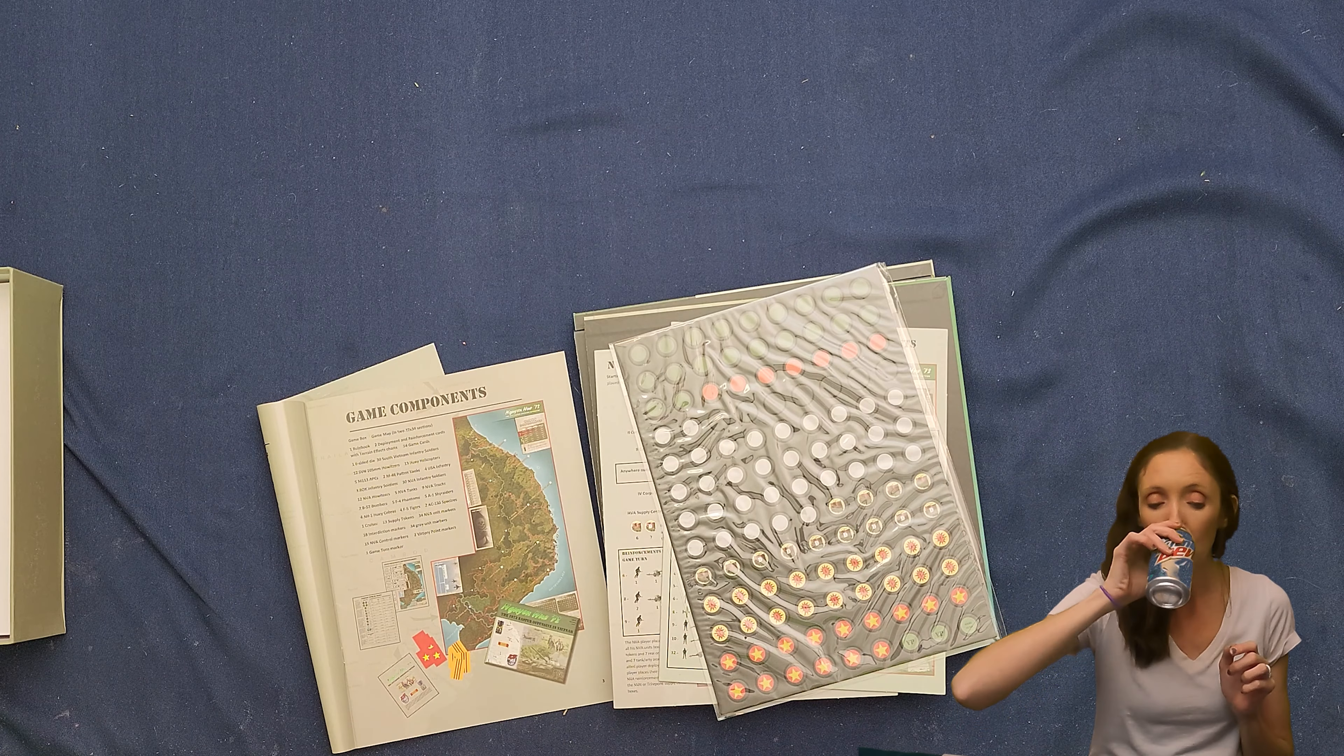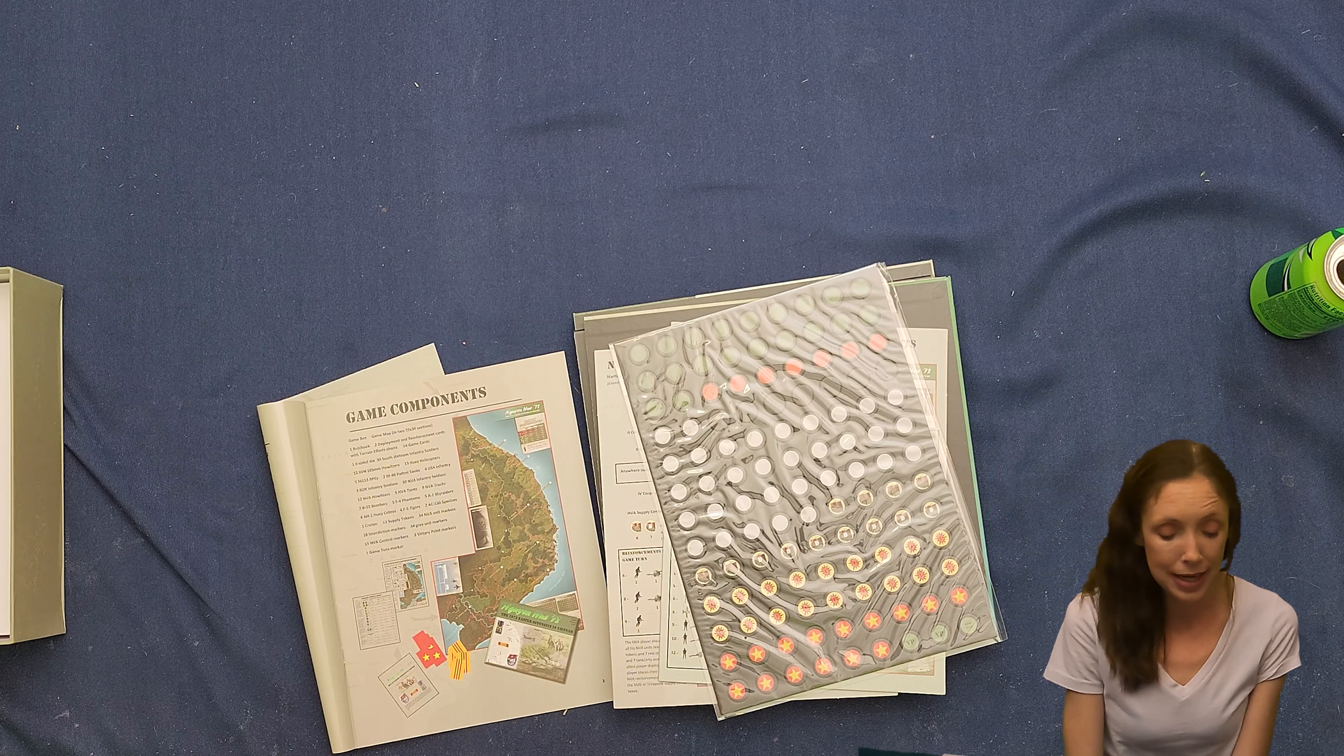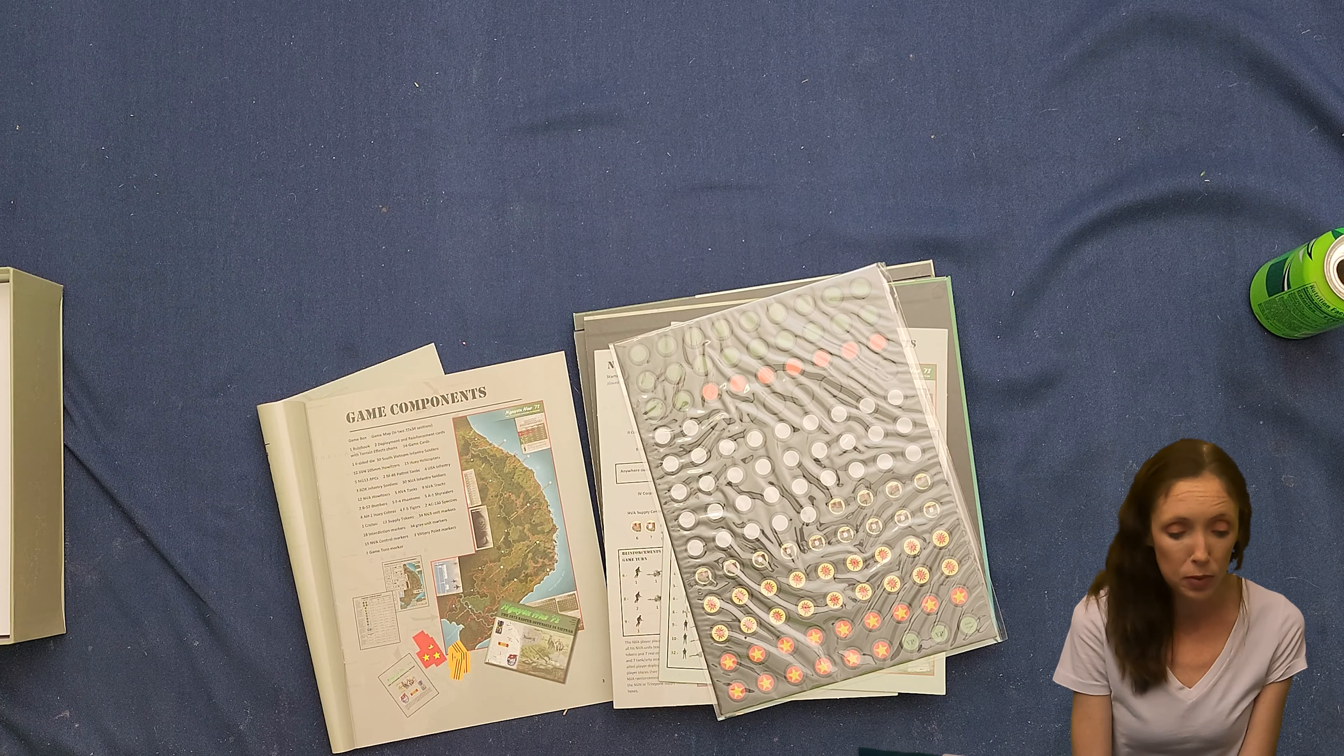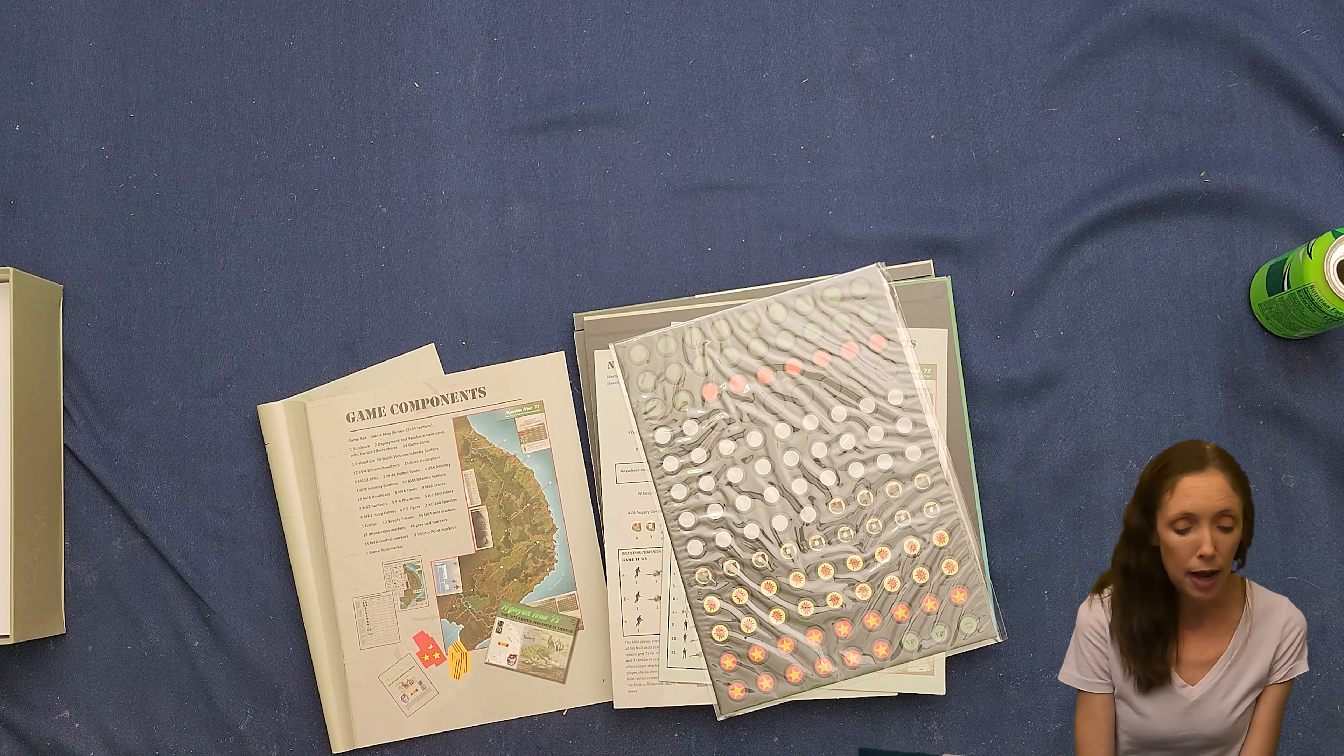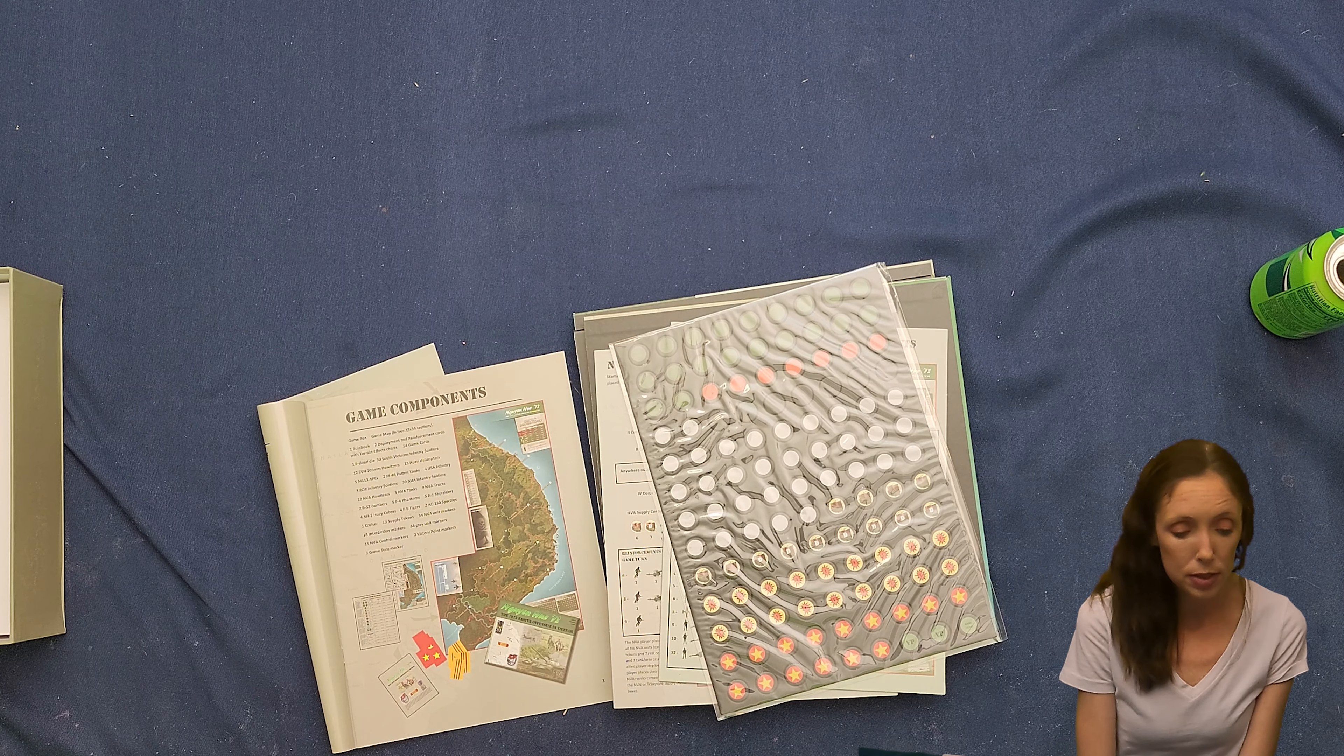So here are the components. Excuse me. We have a game box. Nice. A game map. It says it is in two 22 by 34 sections, one rule book, two deployment and reinforcement cards with terrain effects charts, 54 game cards, one six sided die, 30 South Vietnam infantry soldiers, 12 SVN 105 millimeter howitzers, 13 Huey helicopters, five